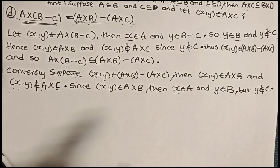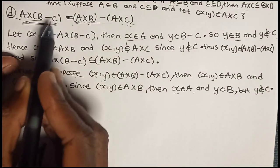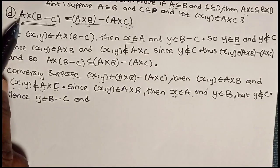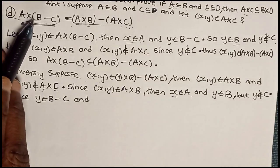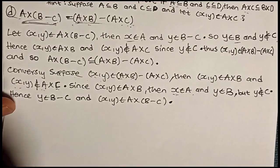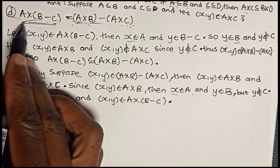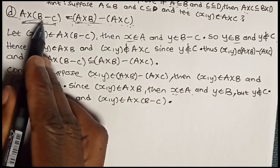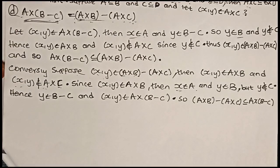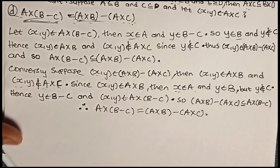So if Y is not in C, then Y will be in B minus C. We conclude that the pair (X, Y) is indeed in A cross (B minus C). So (A cross B) minus (A cross C) is also a subset of A cross (B minus C). Therefore the two sets are equal, since they are subsets of each other.